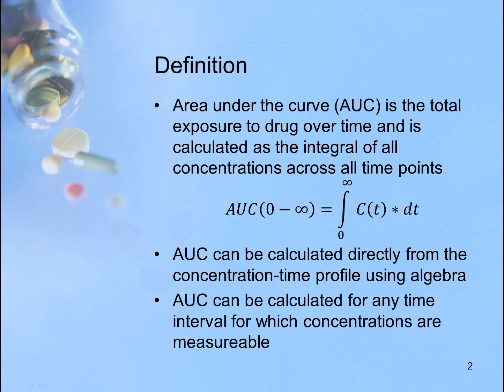Area under the curve, or AUC, is the total exposure to drug over time and can be calculated as the integral of all concentrations across all time points.